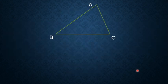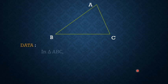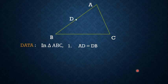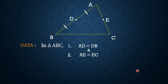Here is a scalene triangle ABC. Let us write down the data. In triangle ABC, point number 1: AD is equal to DB, so D is the point on AB such that AD equals DB. Point number 2: E is the point on AC such that AE is equal to EC. This is the data part.